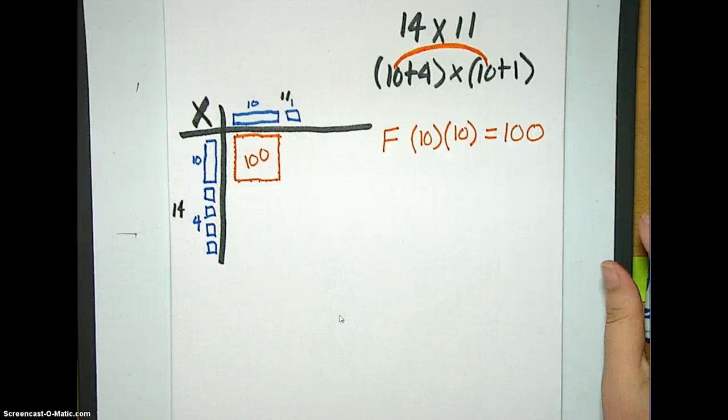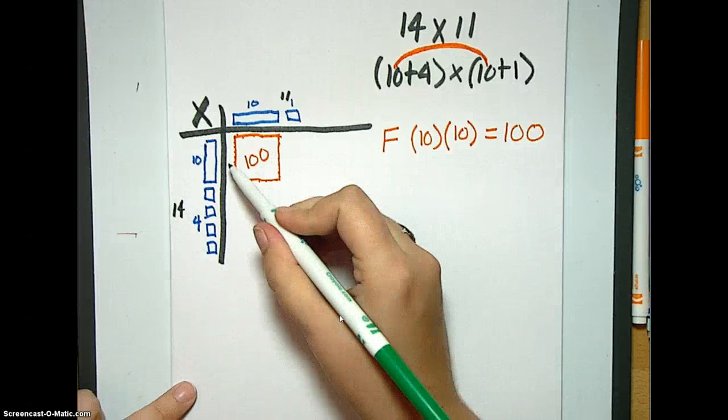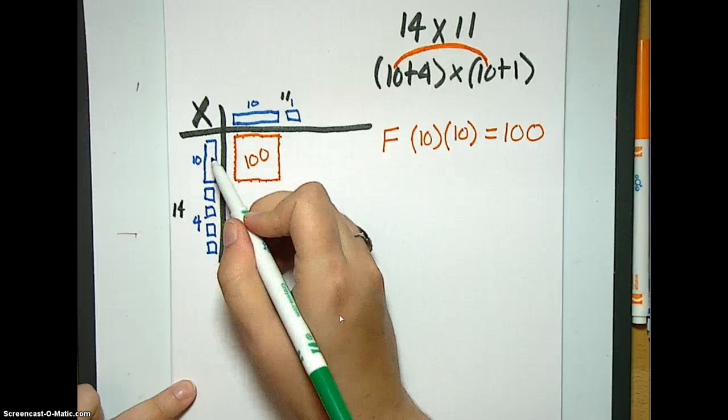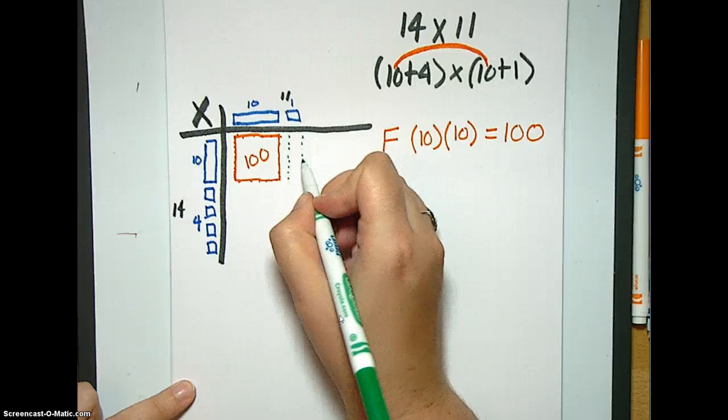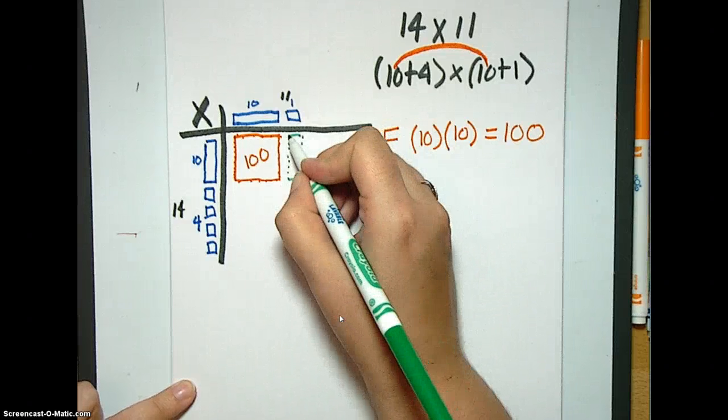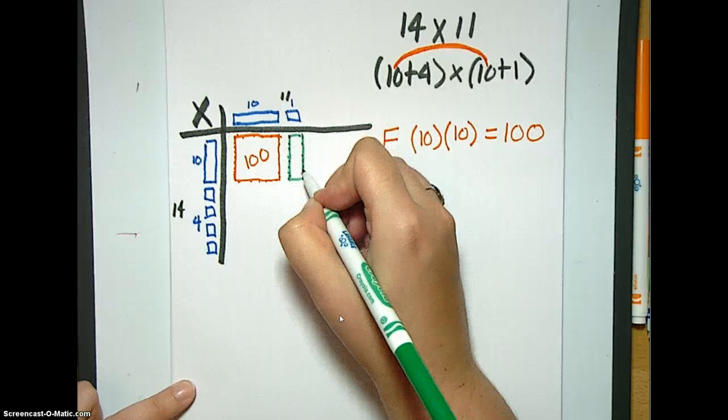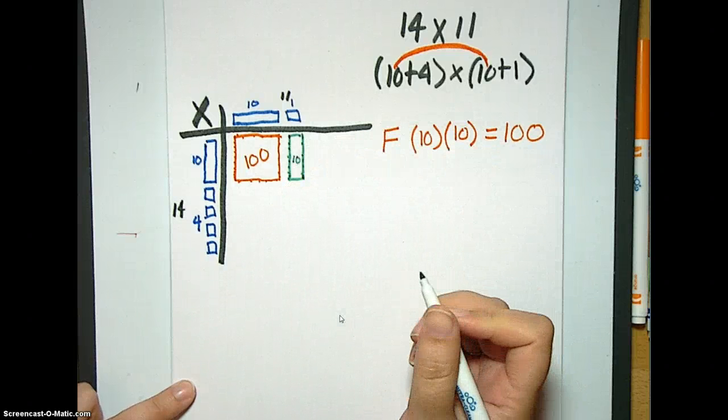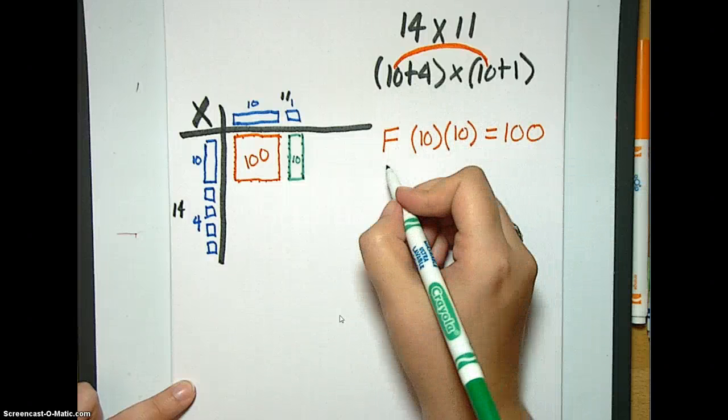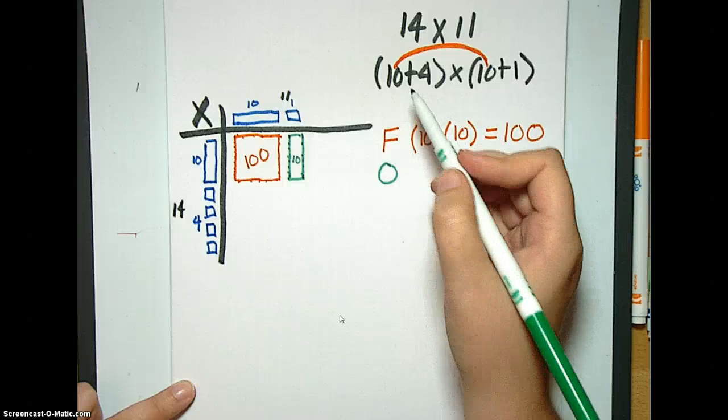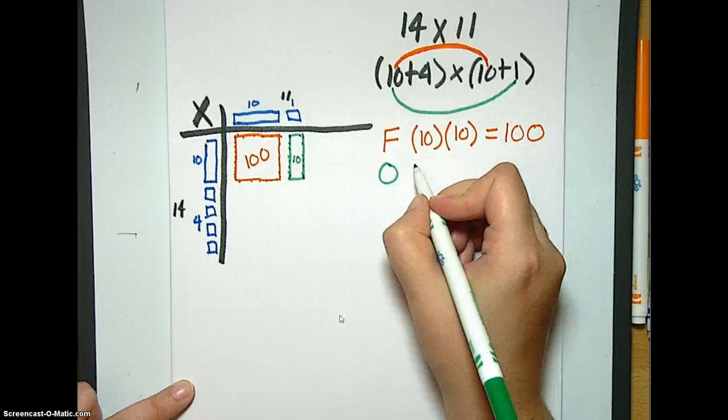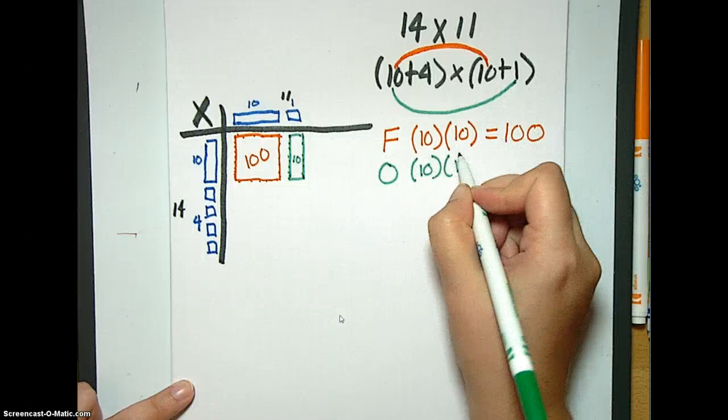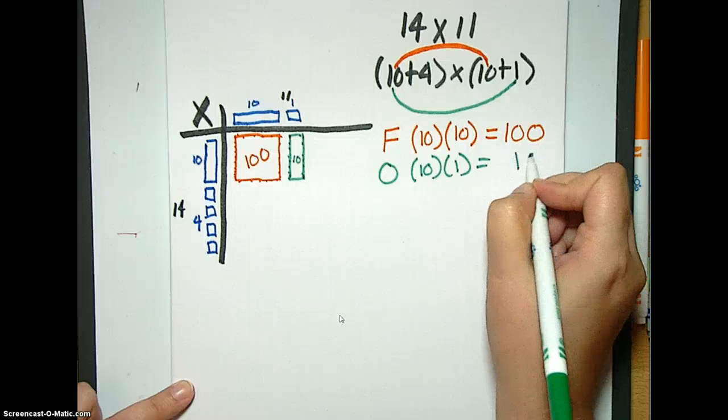Then, we're going to do our O in FOIL. Which is over here. So, we can keep going. Draw our little dots. We have a 10 here. And we have a 1 here. So, we can just kind of do-do-do. Play some more. Connect the dots. There we go. There's a 10. So, outer is the two outer numbers in the parentheses. So, we have 10 times 1. So, 10 times 1 equals 10.